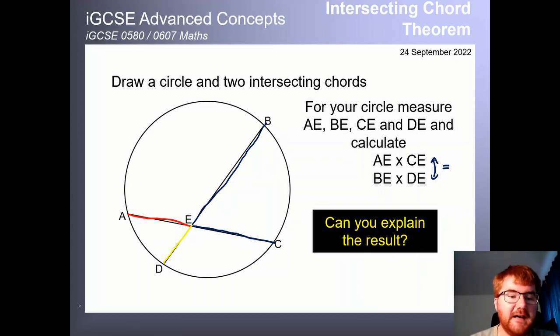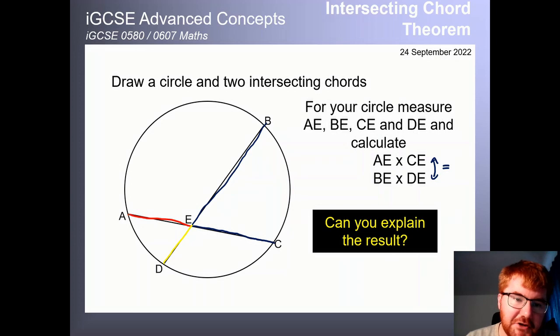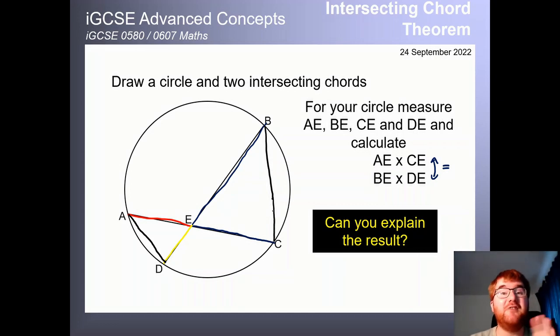Now the reason for that is actually a fact that we do know already on the course. Imagine I just draw a triangle here and I draw a triangle here as well. Well notice all three angles are actually the same here. These are vertically opposite angles, so these are the same and if we actually look at this angle here and this angle here,